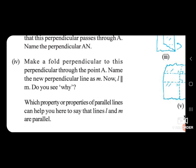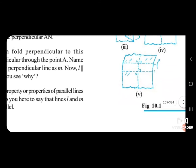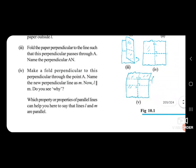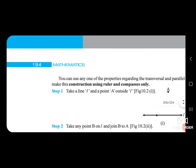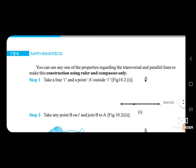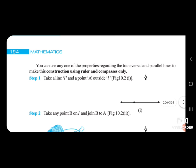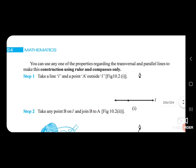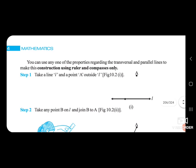Which property of parallel lines can help you here to show that lines L and M are parallel? L and M are parallel. You can use any one of the properties regarding the transversal and parallel lines to make this construction using ruler and compass only.